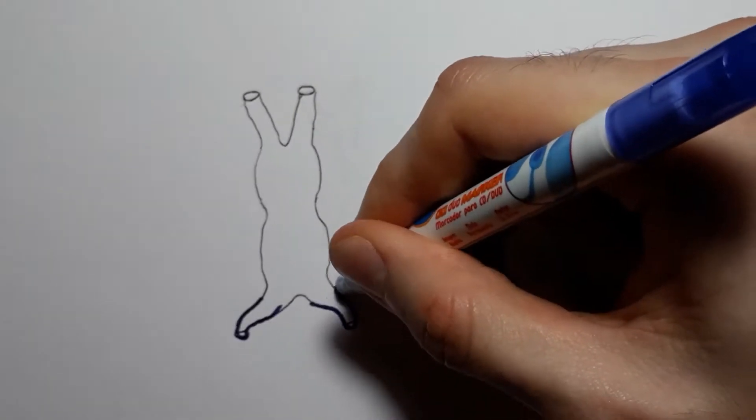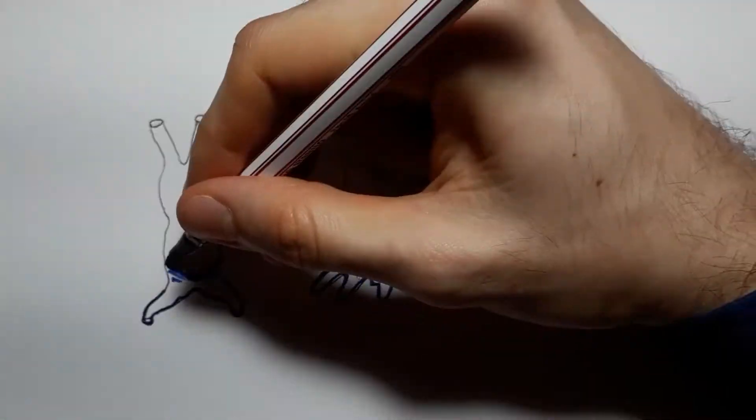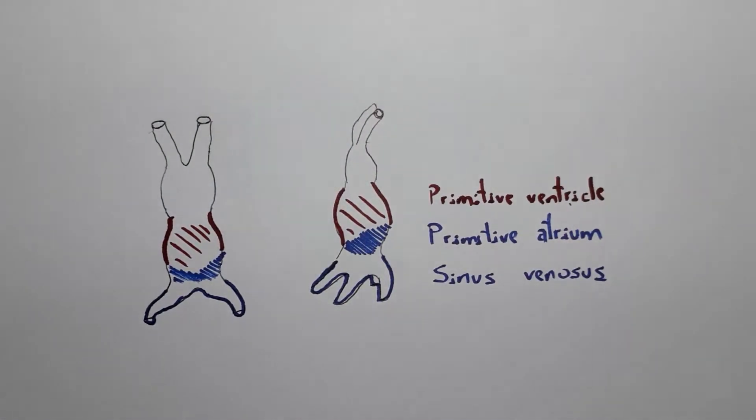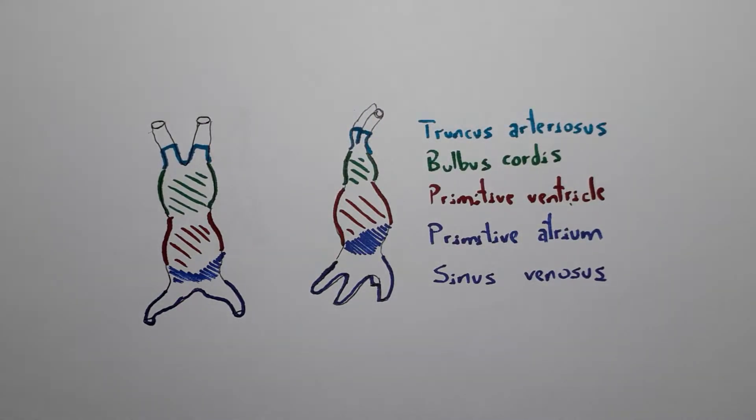We have the sinus venosus, the primitive atrium, the primitive ventricle, the bulbous cordis, and the truncus arteriosus, the structure derived from neural crest cells that's going to give rise to the aorta, the pulmonary trunk, and the semilunar valves.